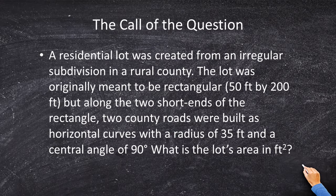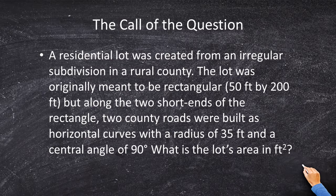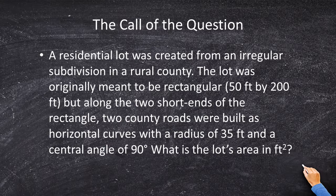A residential lot was created from an irregular subdivision in a rural county. The lot was originally meant to be rectangular, 50 feet by 200 feet. But along the two short ends of the rectangle, two county roads were built as horizontal curves with a radius of 35 feet and a central angle of 90 degrees. What is the lot's area in square feet?